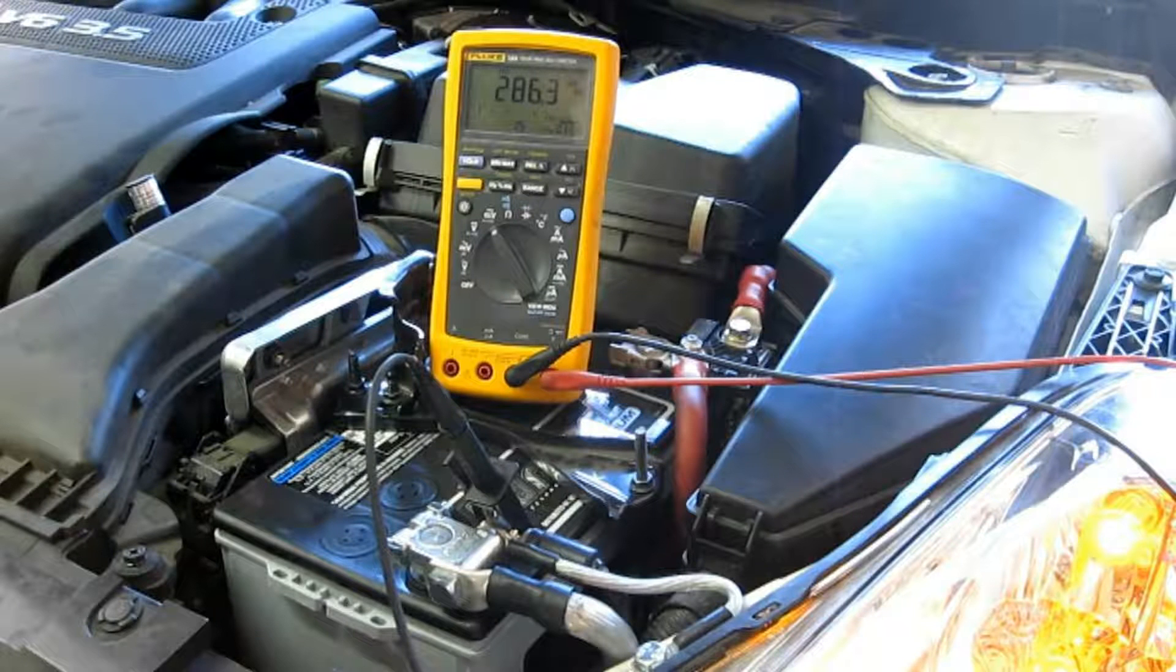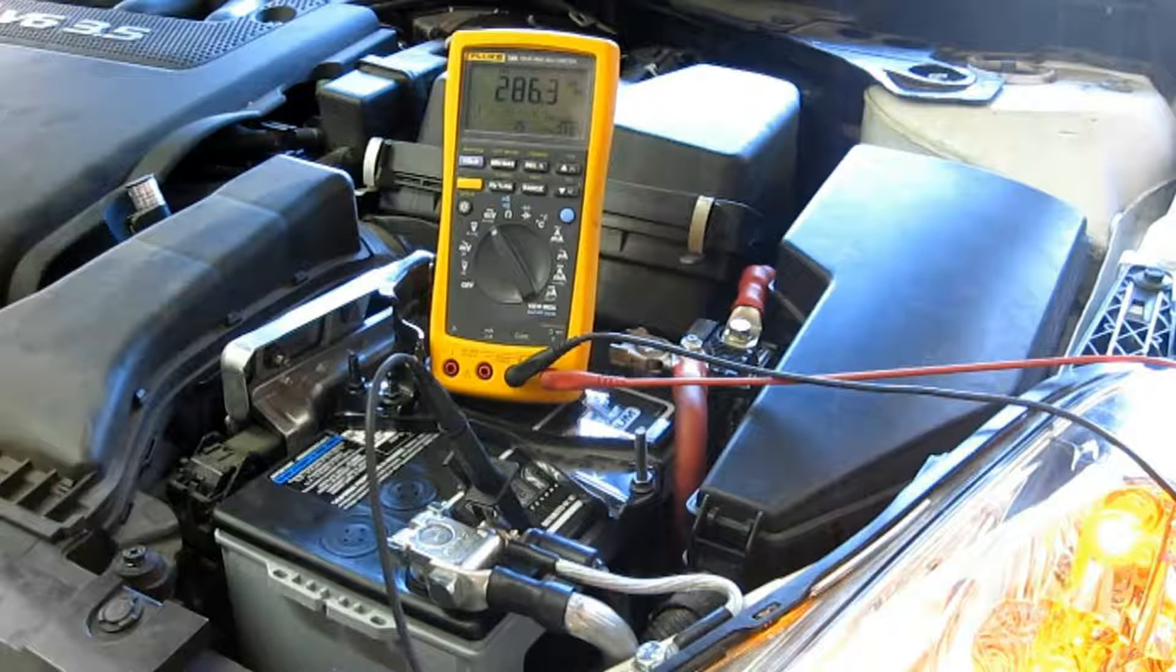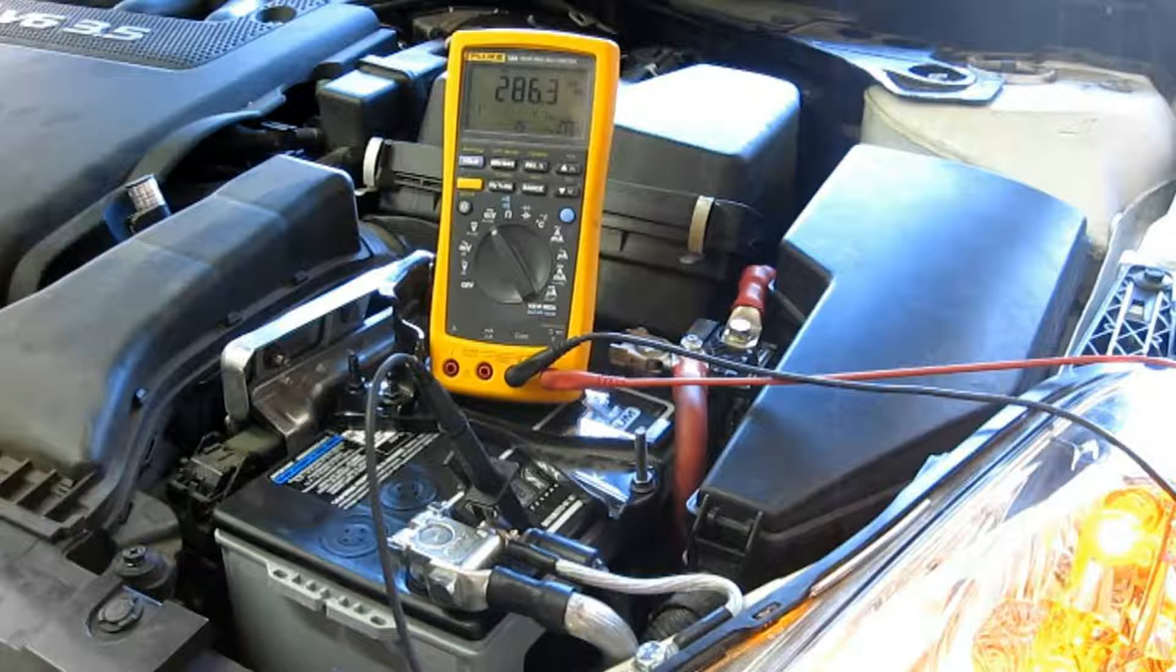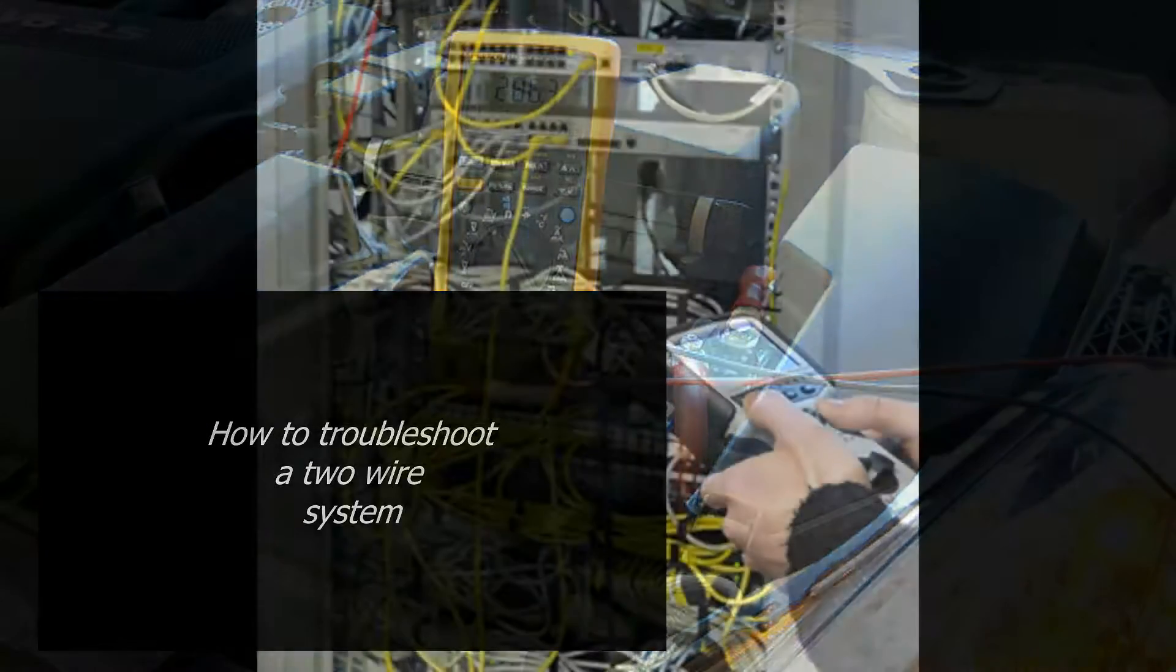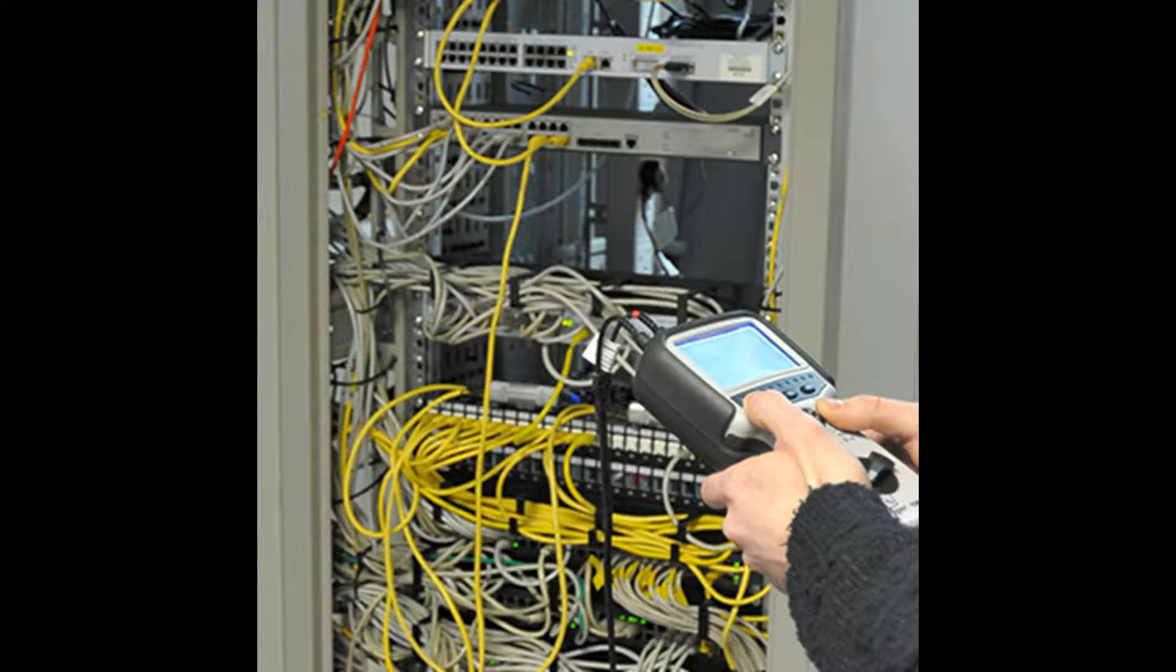Now, the most common method of troubleshooting is to use a multimeter. It's a simple device that easily tells you if you have an open or a short in a wire, but it will not tell you where that open or short is. If you'd like to learn how to use a multimeter, please see my video on how to troubleshoot a two-wire system. Anyway, now that you've found the problem wire, remove the multimeter and hook up your TDR.